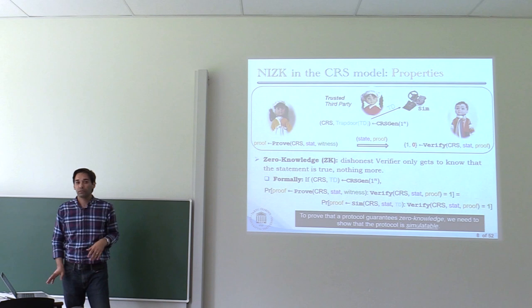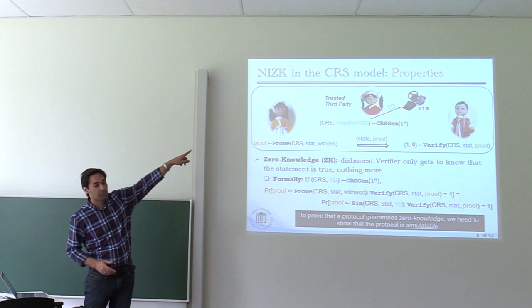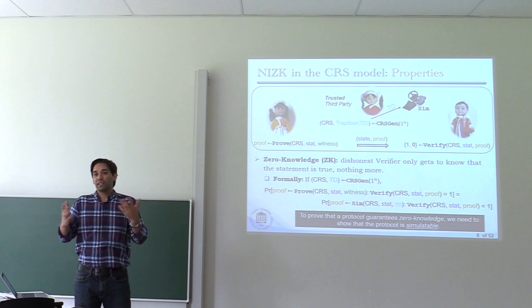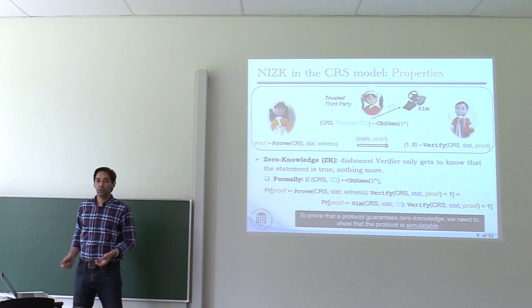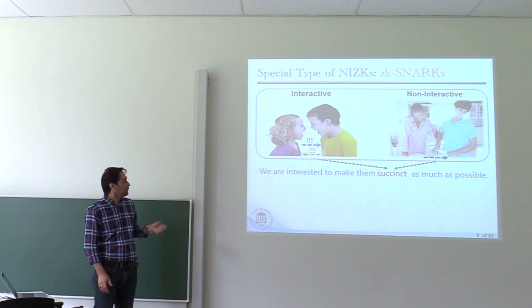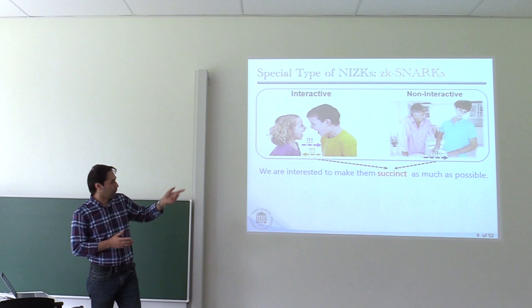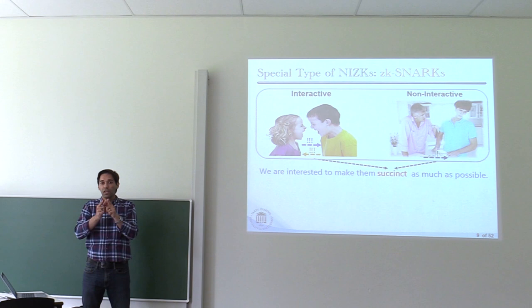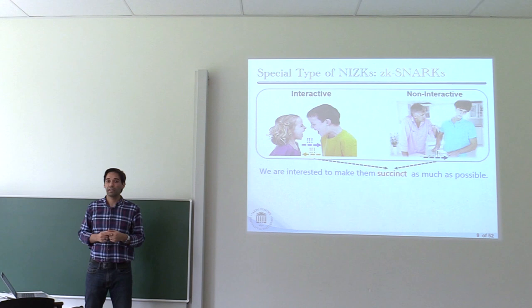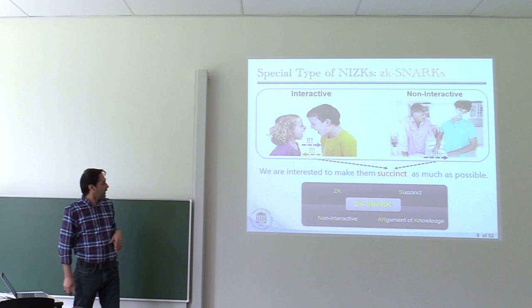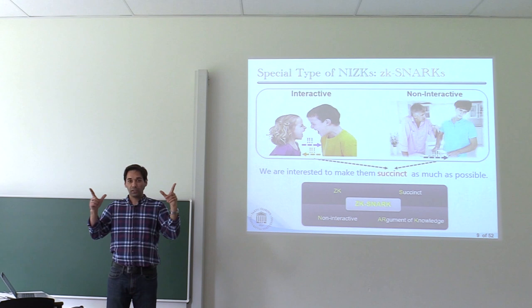When we want to prove that a protocol is zero-knowledge, we need to construct this simulator algorithm. For different protocols we have different simulators, but all of them show that we can simulate proofs. This is important because later we will focus on constructing a simulator for some subversion-secure protocols. In real life we are also very interested in making these arguments succinct. ZK-SNARKs want very short proofs such that even relatively weak clients can verify them very quickly — this is very useful for blockchain applications where proofs can be verified in milliseconds.